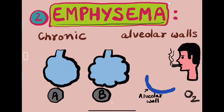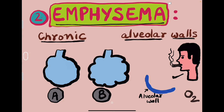Emphysema — a respiratory disorder, very common. It is also called smoker's disease, found in smokers. It is a chronic disease — a long-lasting condition. In this chronic condition, the alveolar walls are affected; they get broken down and damaged, due to which the respiratory surface area gets reduced.